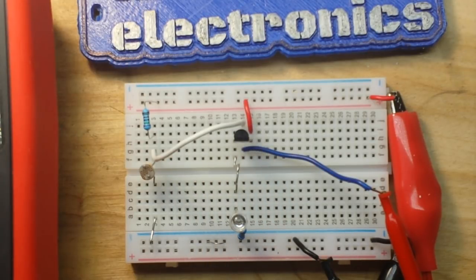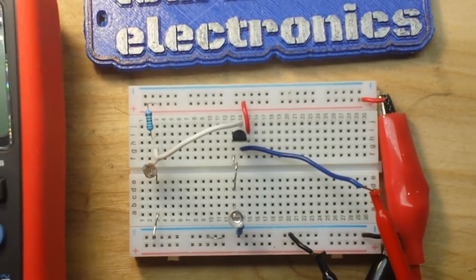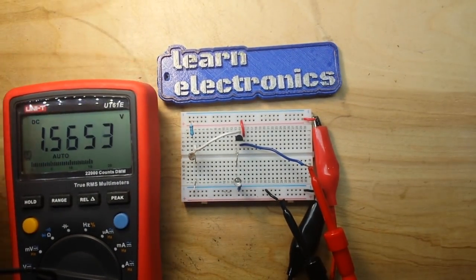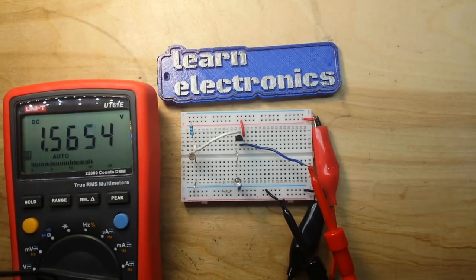Now if we zoom out, you can see right here the voltage which is connected also to the base. Right now it's putting out 1.56 volts. I'm giving this whole circuit 5 volts. And if I move my hand...